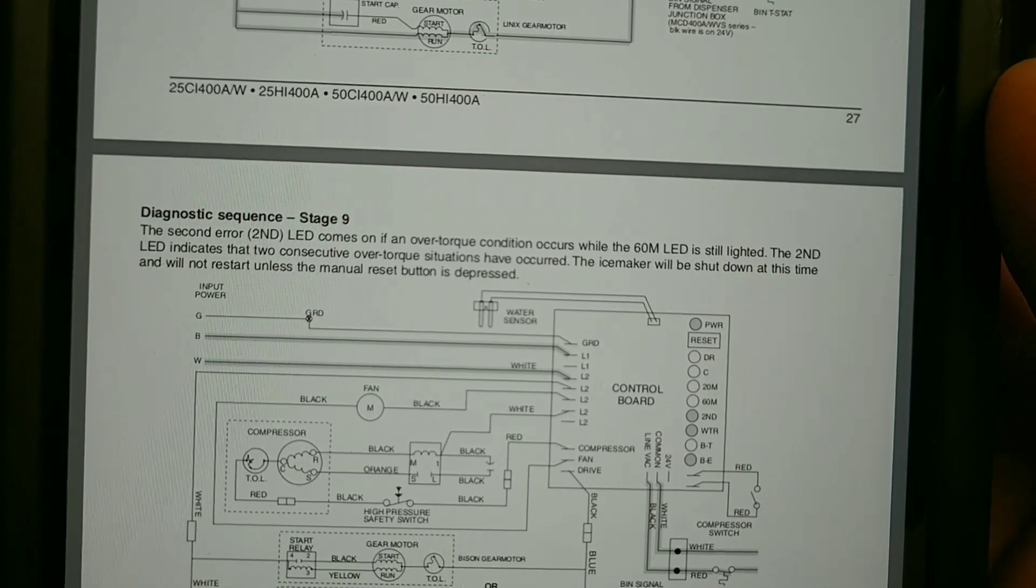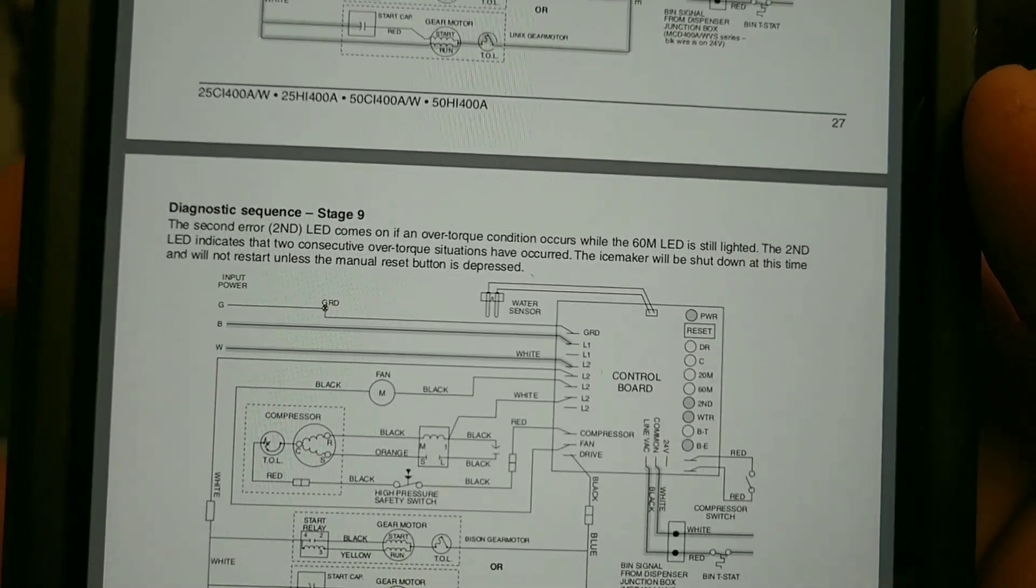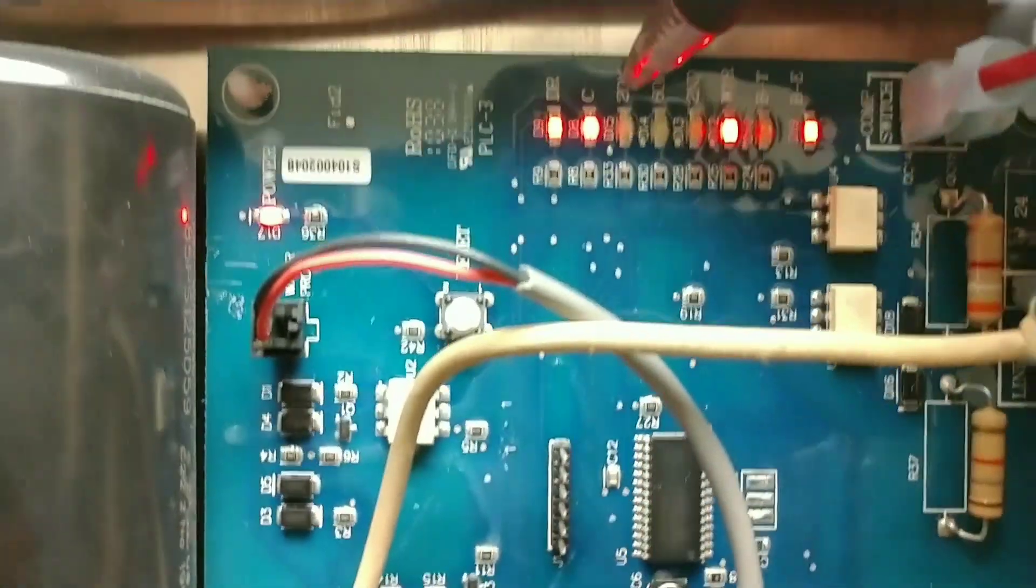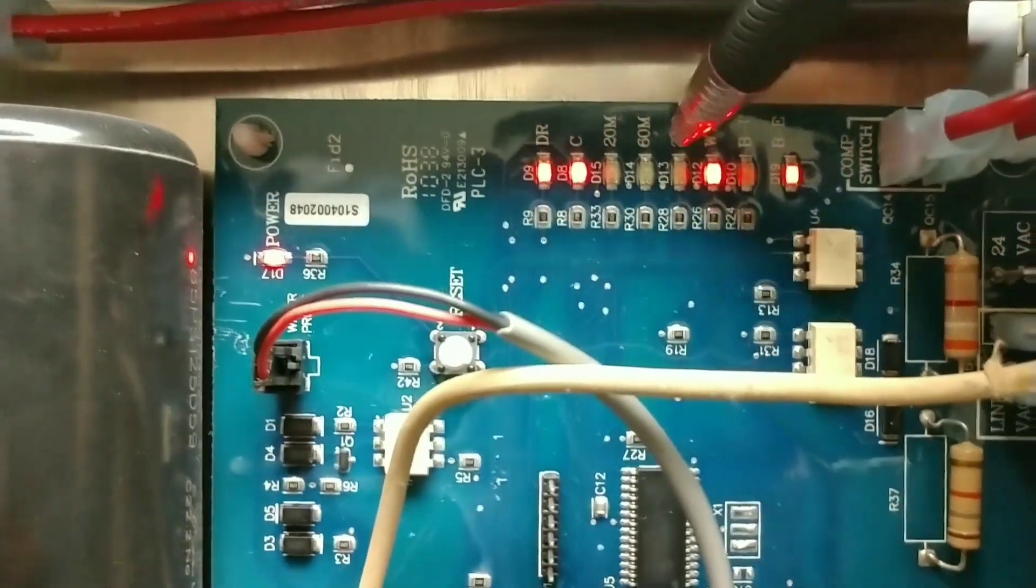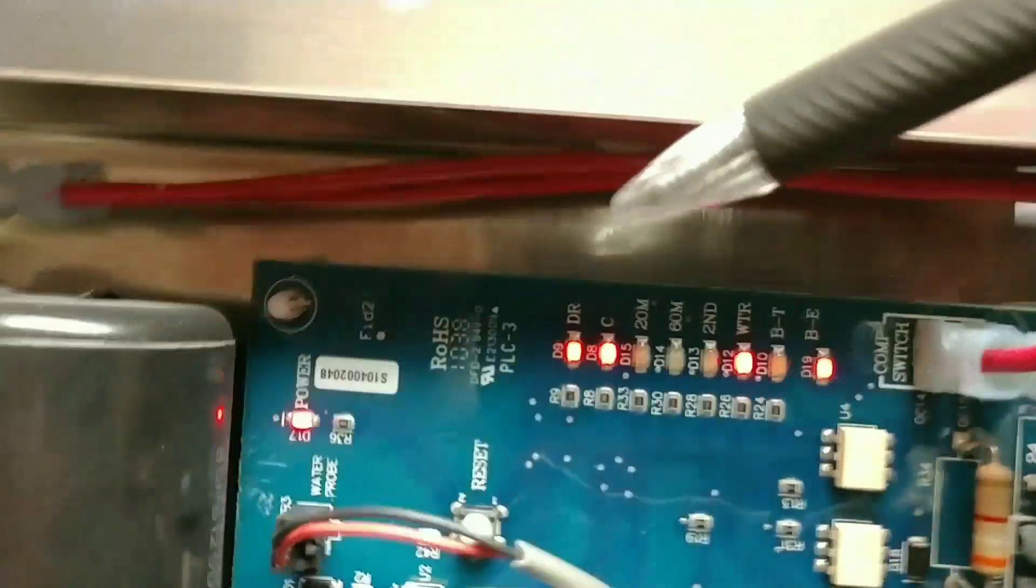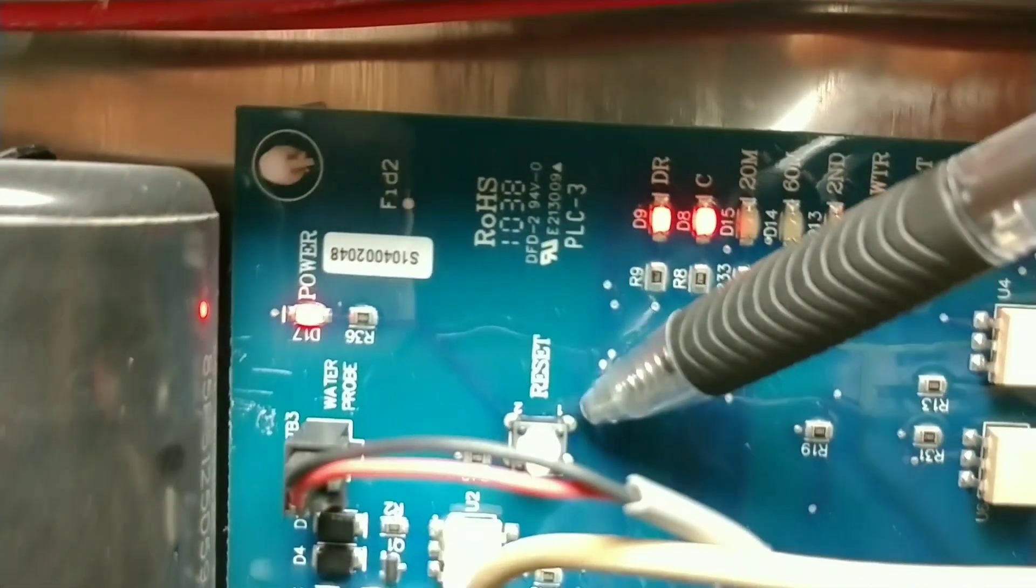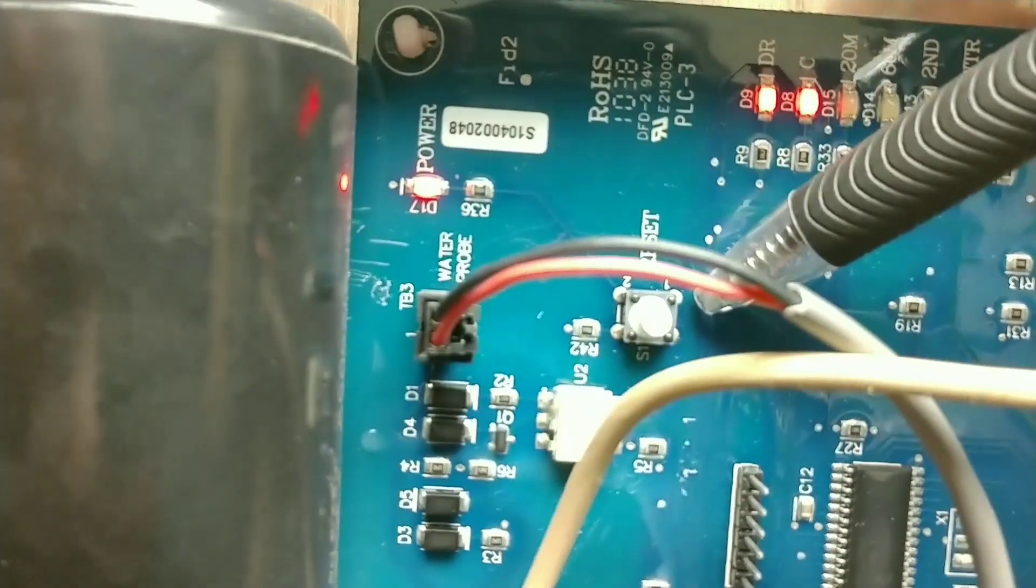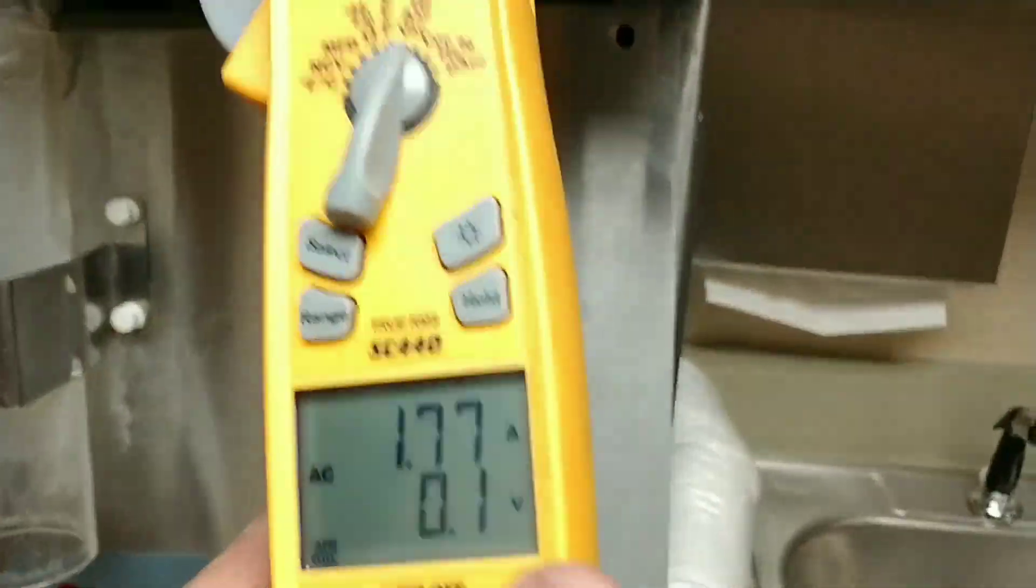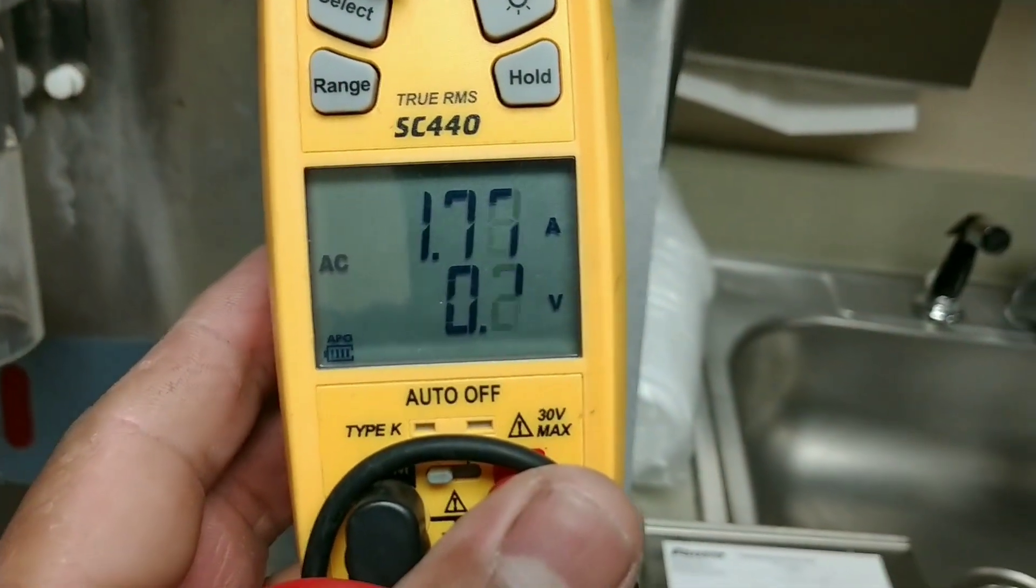So like I said, when I showed up we had the 20, the 60, and the second LED. All you gotta do on these Folletts is hit that reset right there, it's a nice little reset button, and you begin normal operation. As you can see we're running about 1.7 amps, that is actually slightly high.